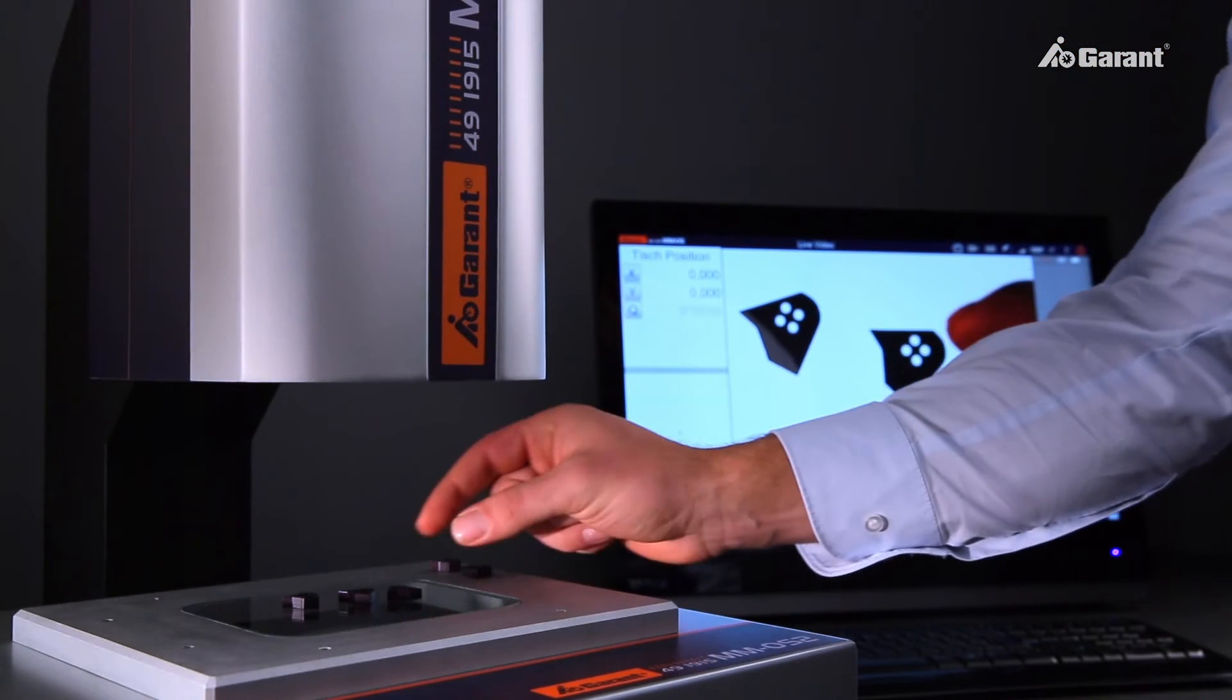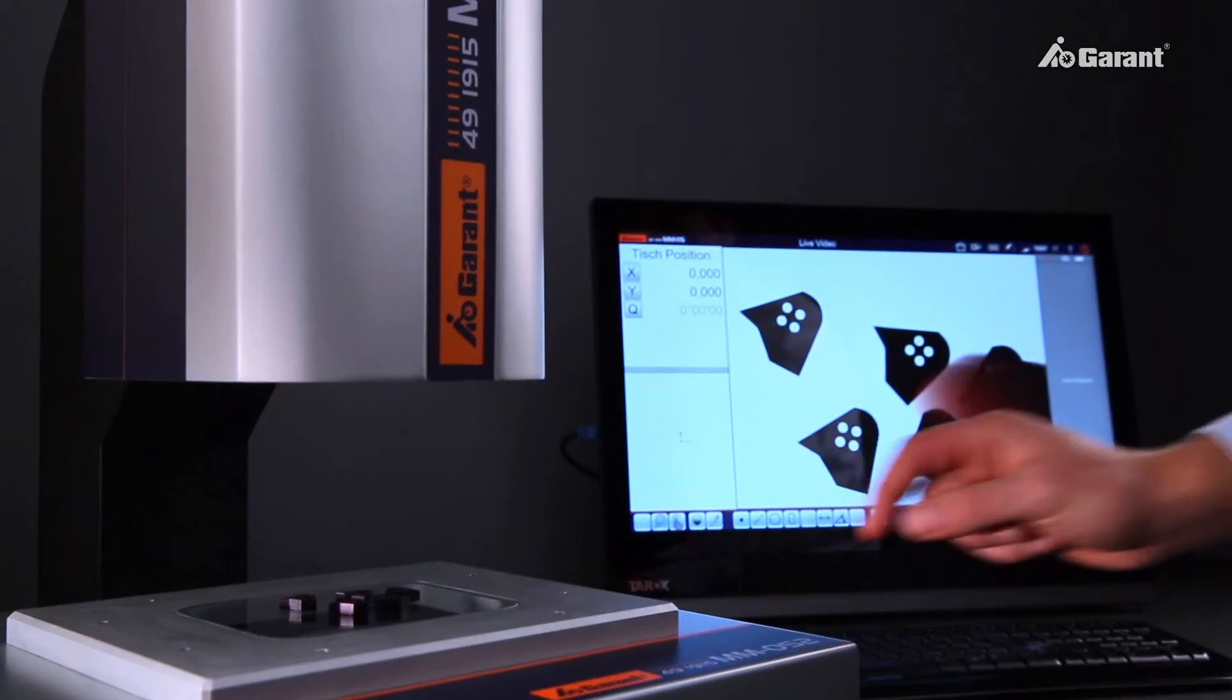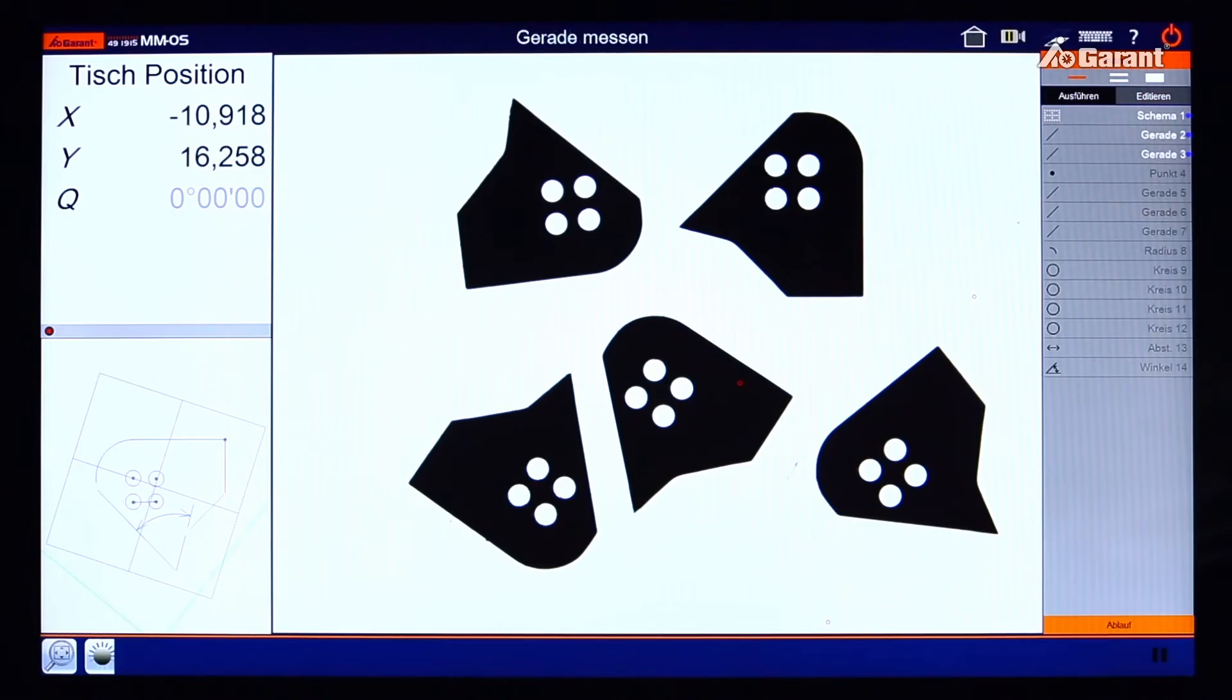The measured values are evaluated automatically with numerical and graphical information on points where tolerances are exceeded.